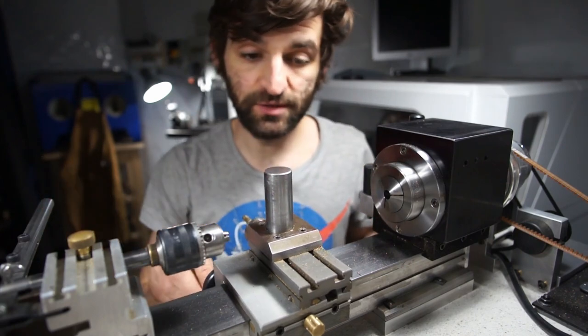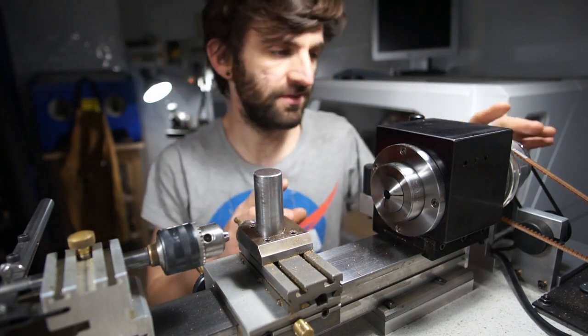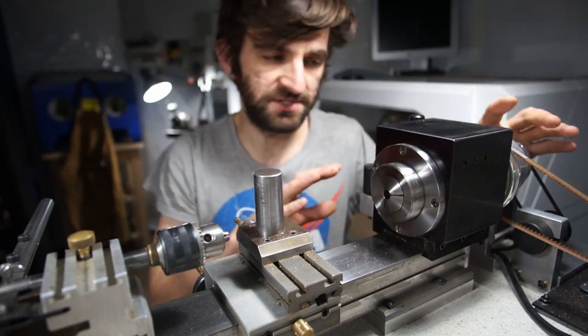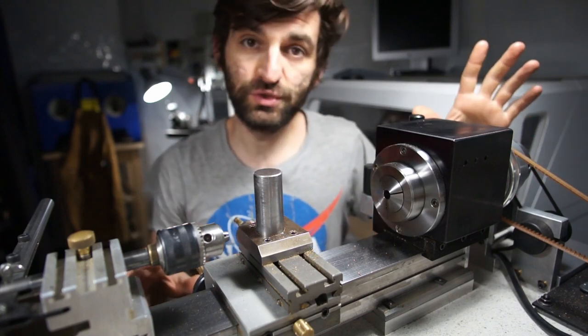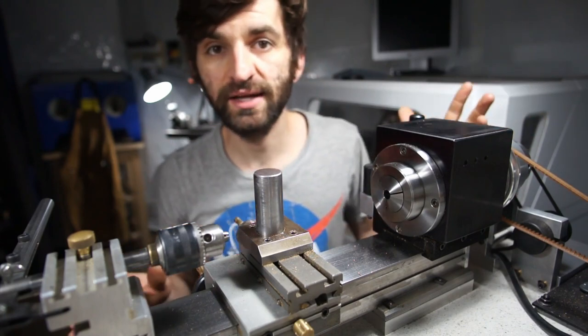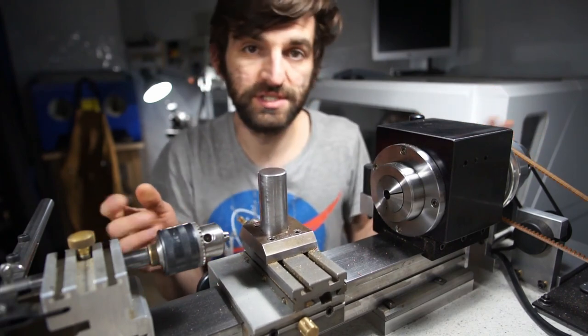The next step after all that was done was a way to accurately cut my threads. With this style of lathe there's no change gears, there's complicated systems that people have made in the past but I figured the most simple system would be to use electronic feedback to drive the screw or drive the carriage to whatever thread pitch I wanted.